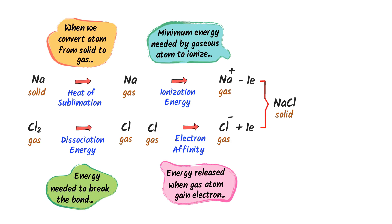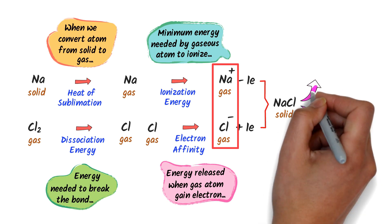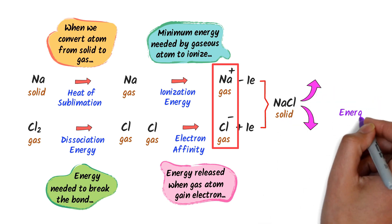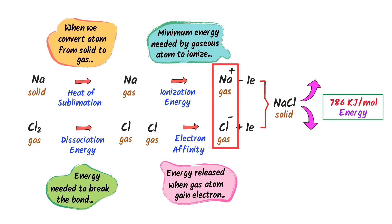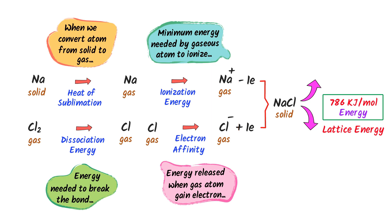Now listen carefully. When sodium ion and chlorine ion combine together to form one mole of sodium chloride, in this last stage they release 786 kilojoules per mole of energy, which is known as lattice energy. So this energy is the lattice energy.